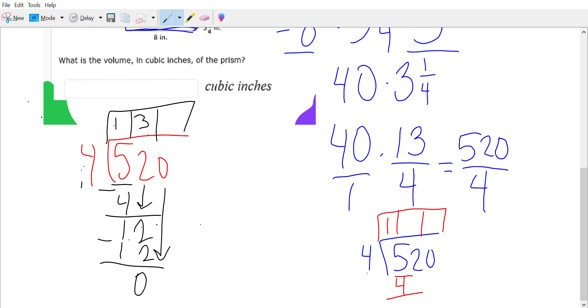So our quotient is 130. That quotient of 130 is our answer to our volume question. So what is the volume in cubic inches? Our volume is 130 cubic inches.